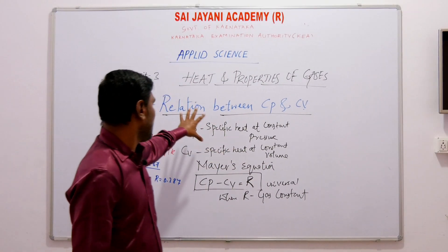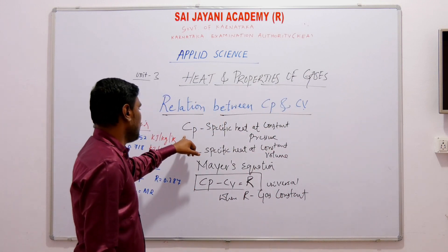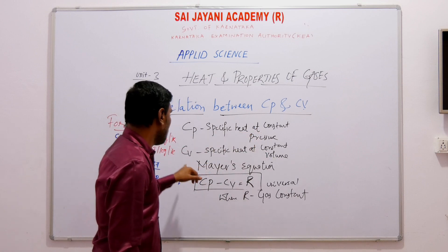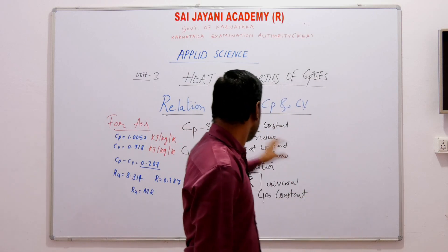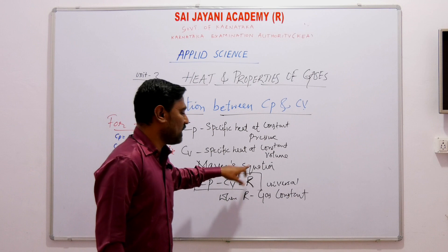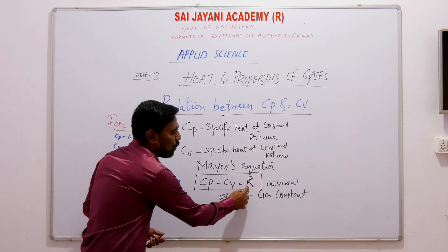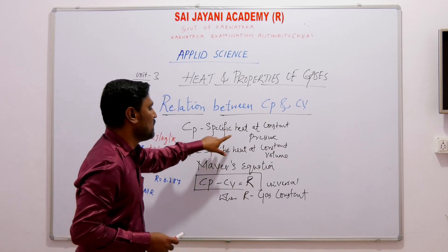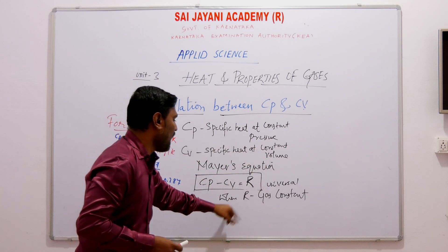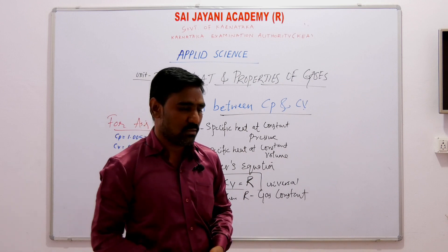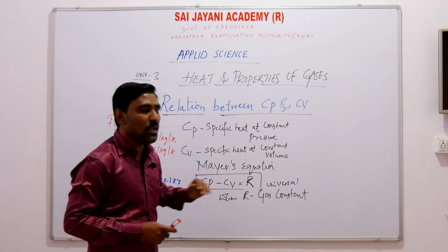Let's discuss the next important topic: the relation between Cp and Cv. Cp is specific heat at constant pressure and Cv is specific heat at constant volume. There is an equation called Mayer's equation which gives the relation between Cp and Cv, and it is given by: Cp minus Cv equals R, where R is the universal gas constant.